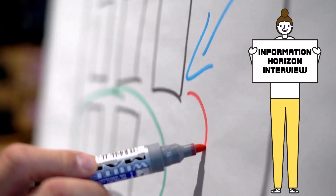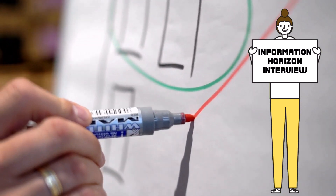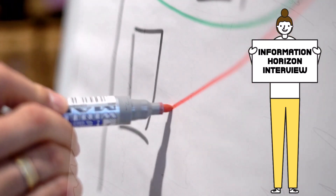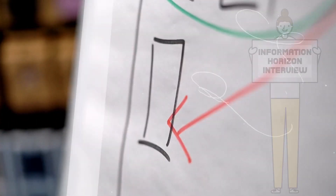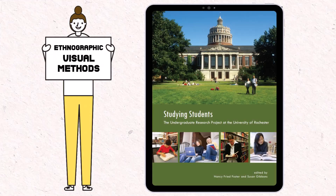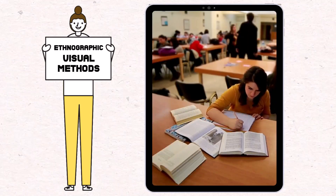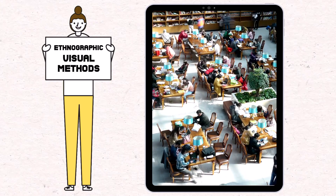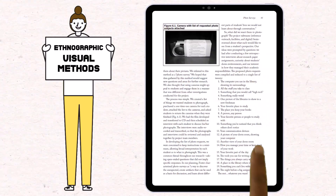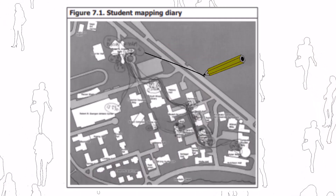Our first original application was the information horizon method. It entails a semi-structured interview while the participant completes a diagramming exercise of their information horizon — that is, their perceived information environment. In the mid-2000s, a groundbreaking ethnography used visual research methods to discover how undergraduate students write research papers and use their university library. Student participants conducted photo surveys of their lives and made mapping diaries of their movements across campus.